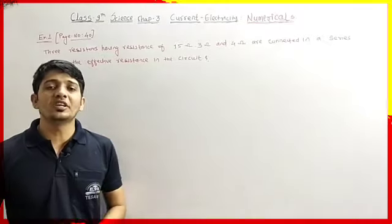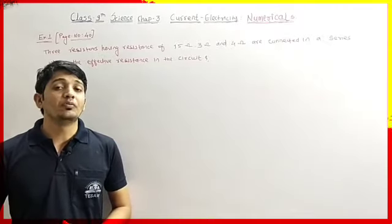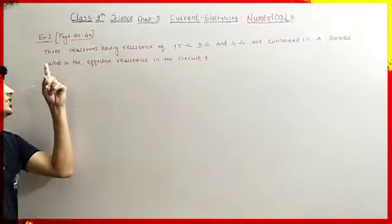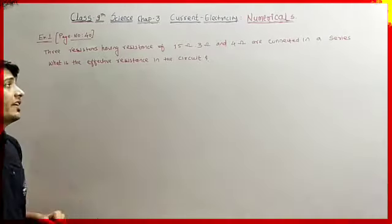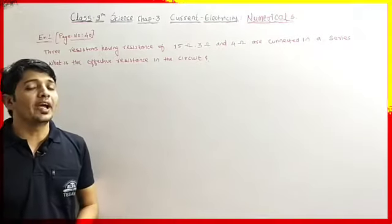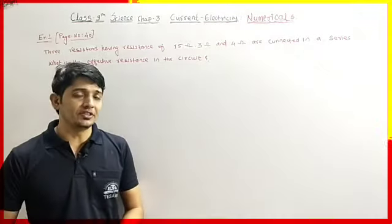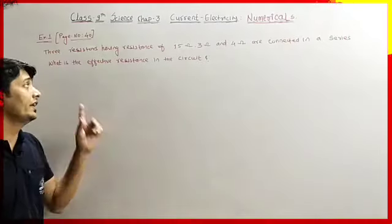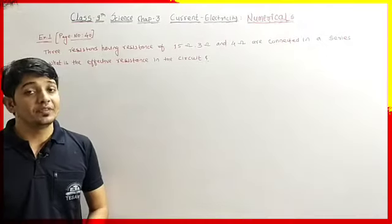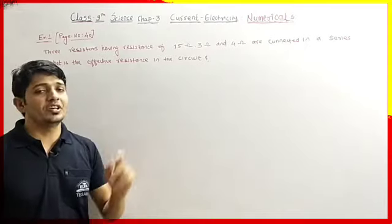The first question given in your textbook, page number 14, says: three resistors having resistance of 15 ohm, 3 ohm, and 4 ohm are connected in series. We have to calculate the effective resistance in the circuit.